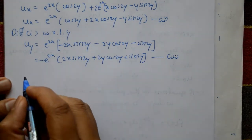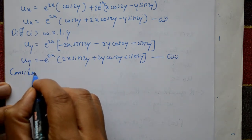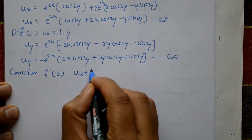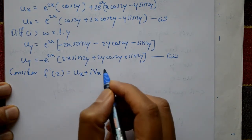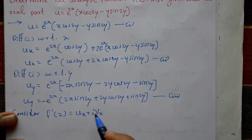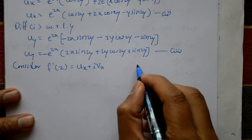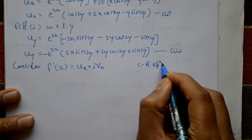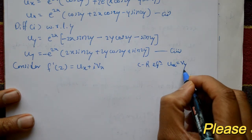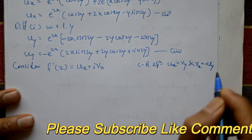Now consider f'(z) = ∂u/∂x + i·∂v/∂x. Since the real part is given, change the imaginary part using the Cauchy-Riemann equations: ∂u/∂x = ∂v/∂y and ∂v/∂x = -∂u/∂y.